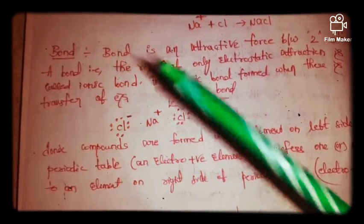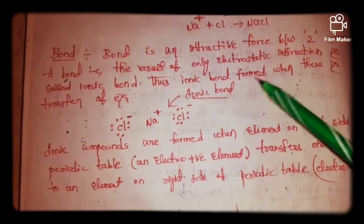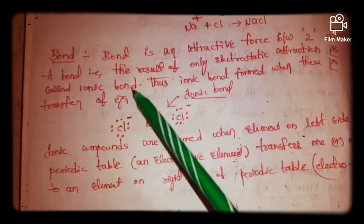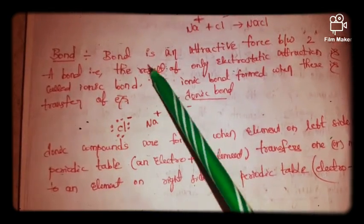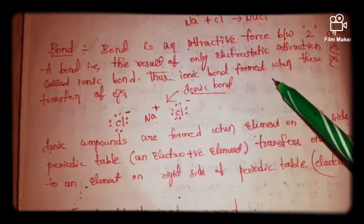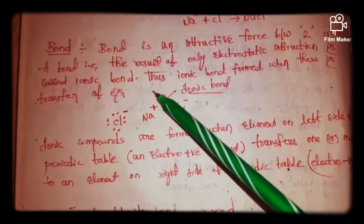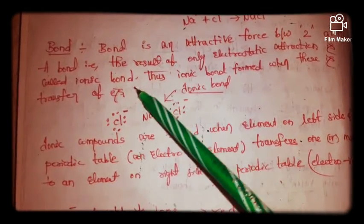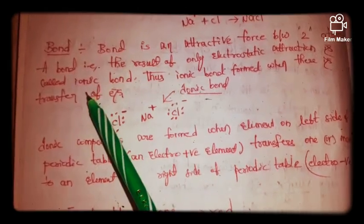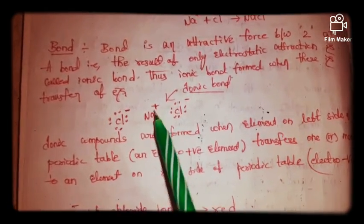The bond which is formed as a result of electrostatic attraction is called an ionic bond. An ionic bond is formed when there is a transfer of electrons. Just to be clear, a bond is simply the attractive force between two atoms.